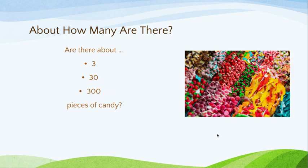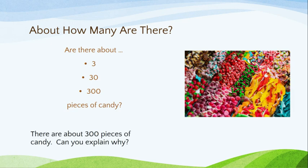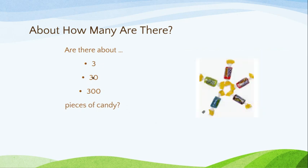Let's try some more. About how many are there? Are there about 3, 30, or 300 pieces of candy? Just by looking at this picture, what do you think would be the best reasonable answer? There are about 300 pieces of candy. Just by looking at the picture, it's pretty easy to eliminate 3 and 30. Three is a very small number, and 30 definitely wouldn't look like what we see in the picture. So 300 pieces of candy is most definitely a reasonable choice.